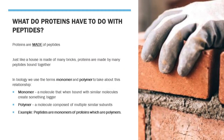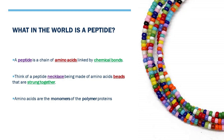So how are proteins related to peptides? Proteins are actually made up of peptides. Just like a house is made of many bricks, proteins are made by many peptides bound together to make a larger structure. In biology we use the terms monomer and polymer to talk about this relationship, where monomers bind together to form polymers. Therefore, amino acids are the monomers of proteins.